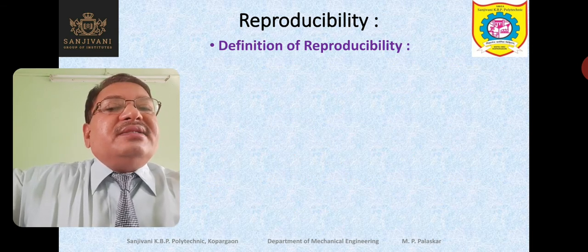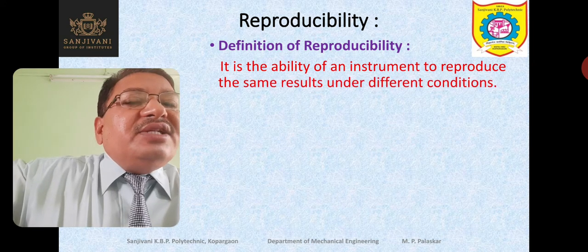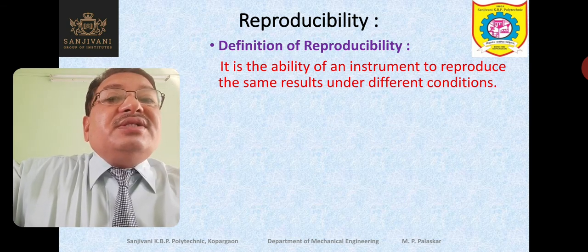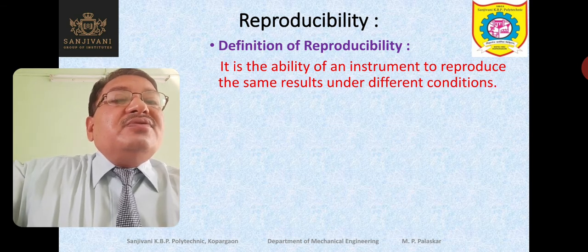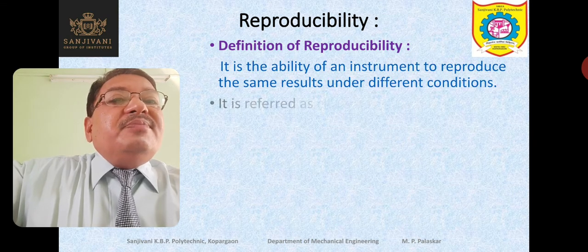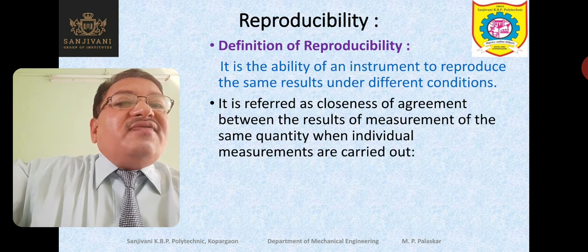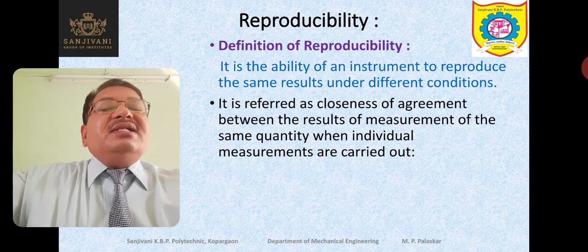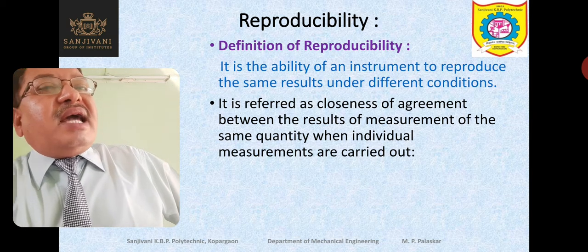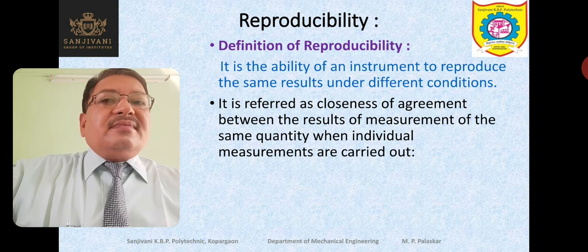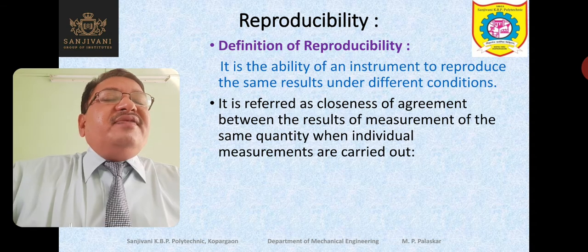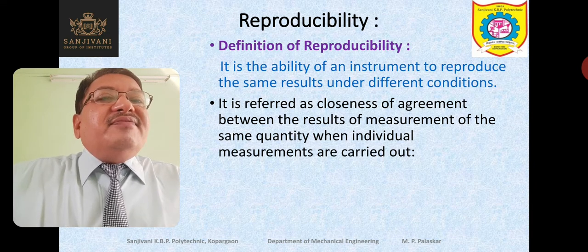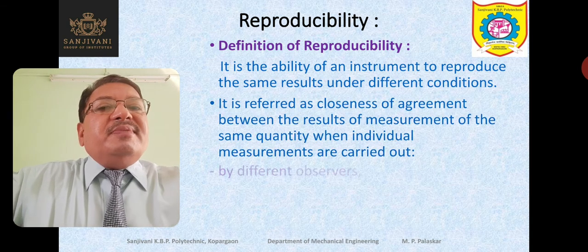Reproducibility is the ability of an instrument to reproduce the same results under different conditions. We are changing the conditions, but the results should not change — the measured values should not vary a lot. It is referred to as the closeness of agreement between the results of measurement of the same quantity when individual measurements are carried out by two different persons, at different places, at different temperatures, pressures, and atmospheric conditions. Still, there should be less variation in the measured values.